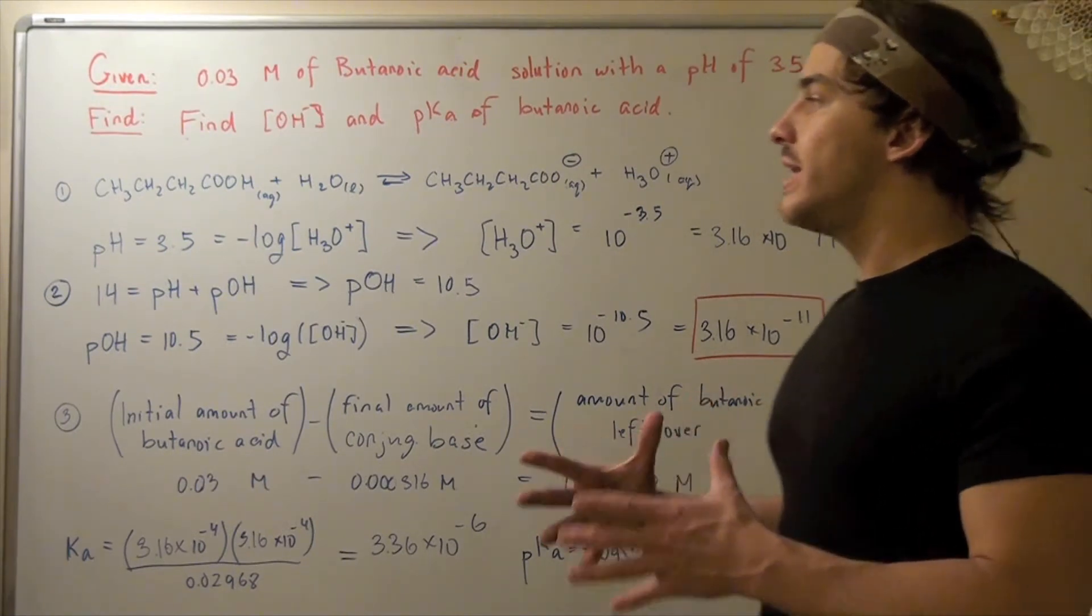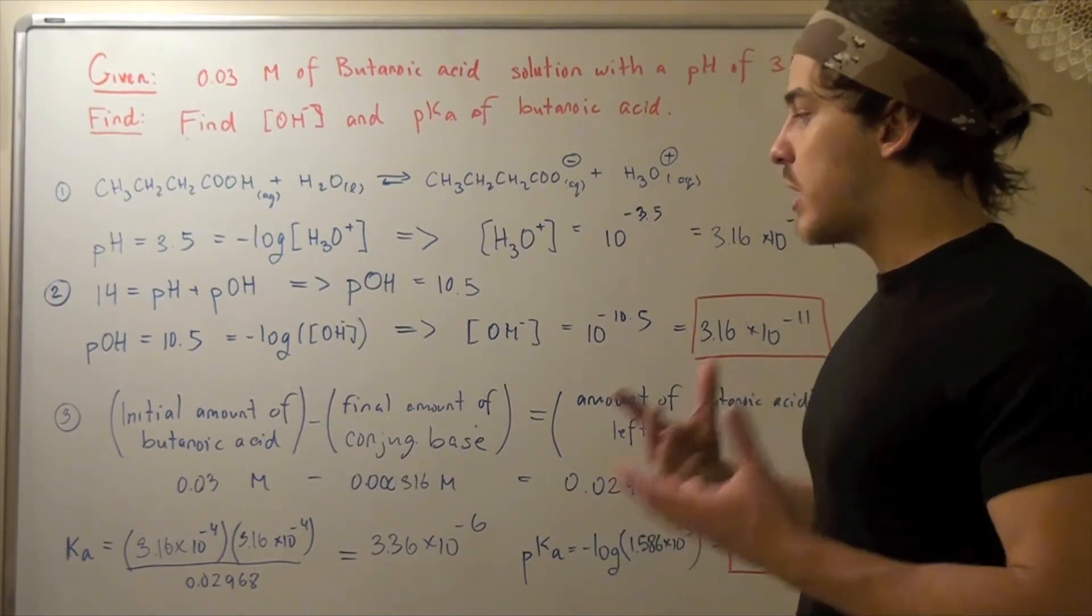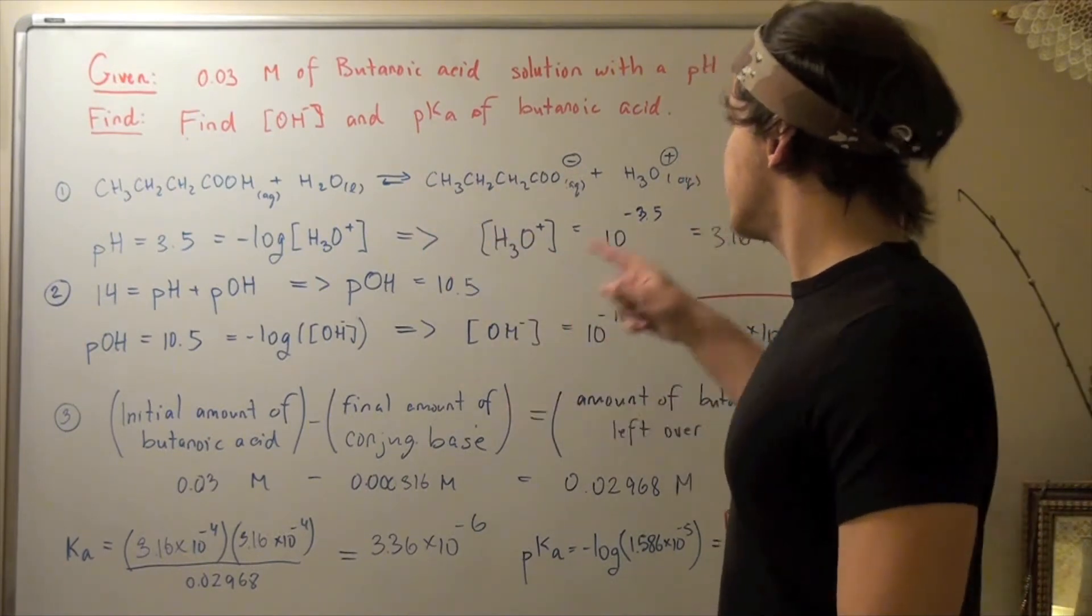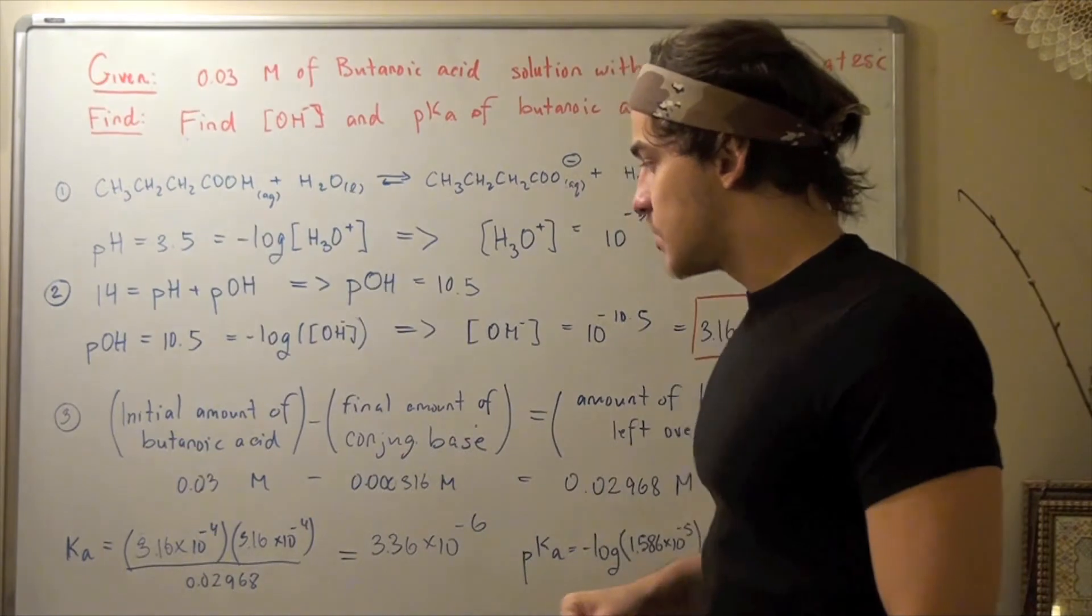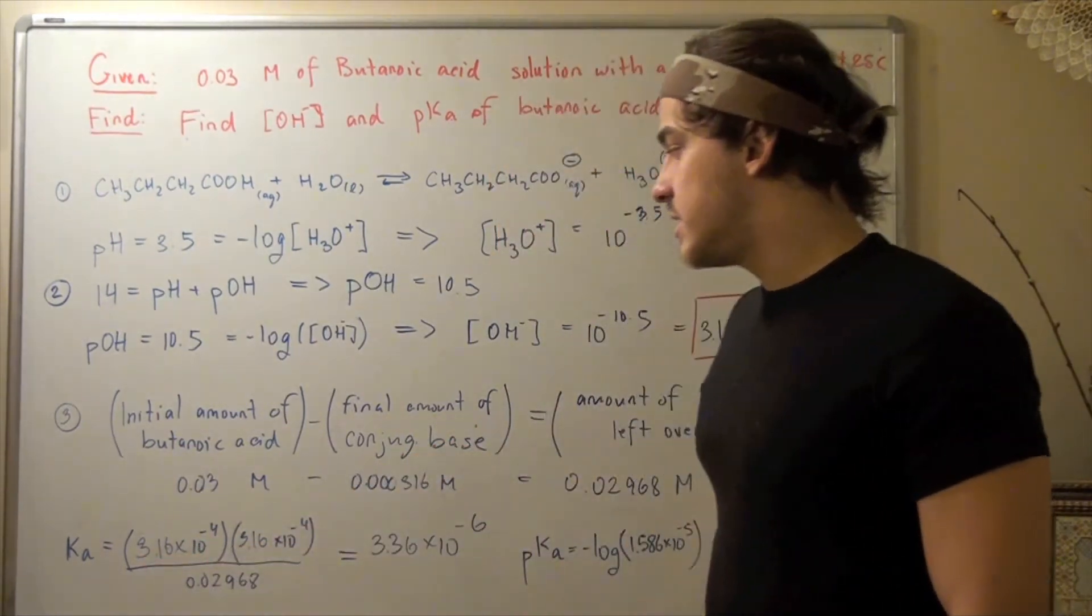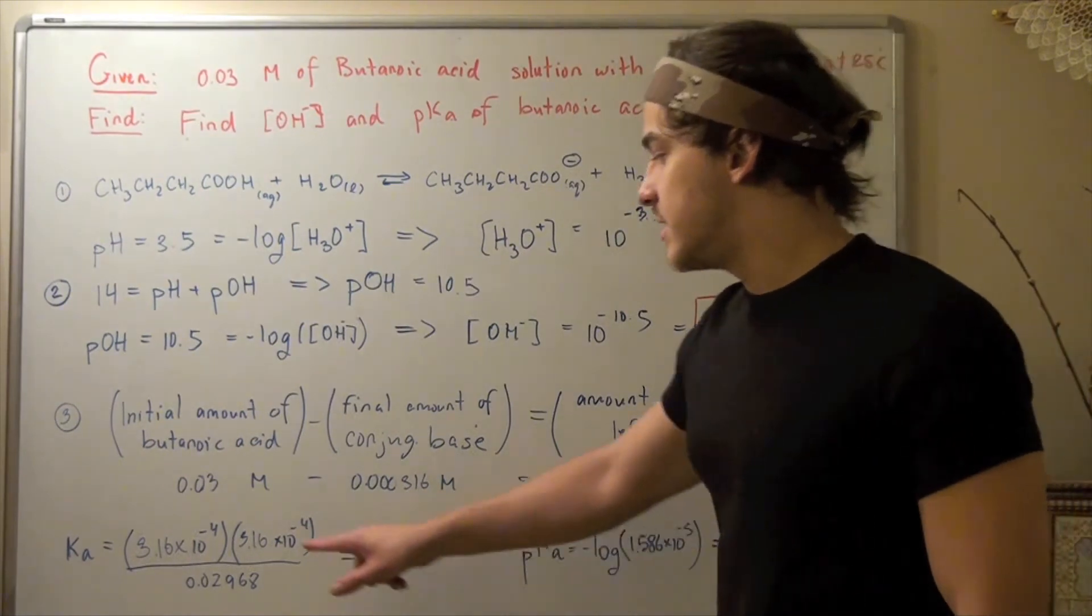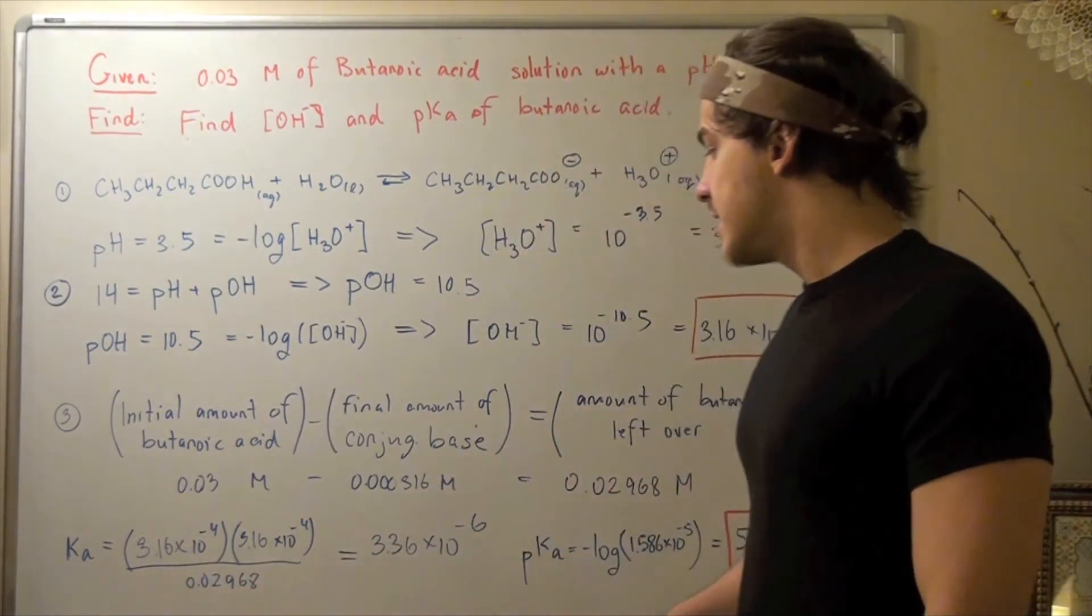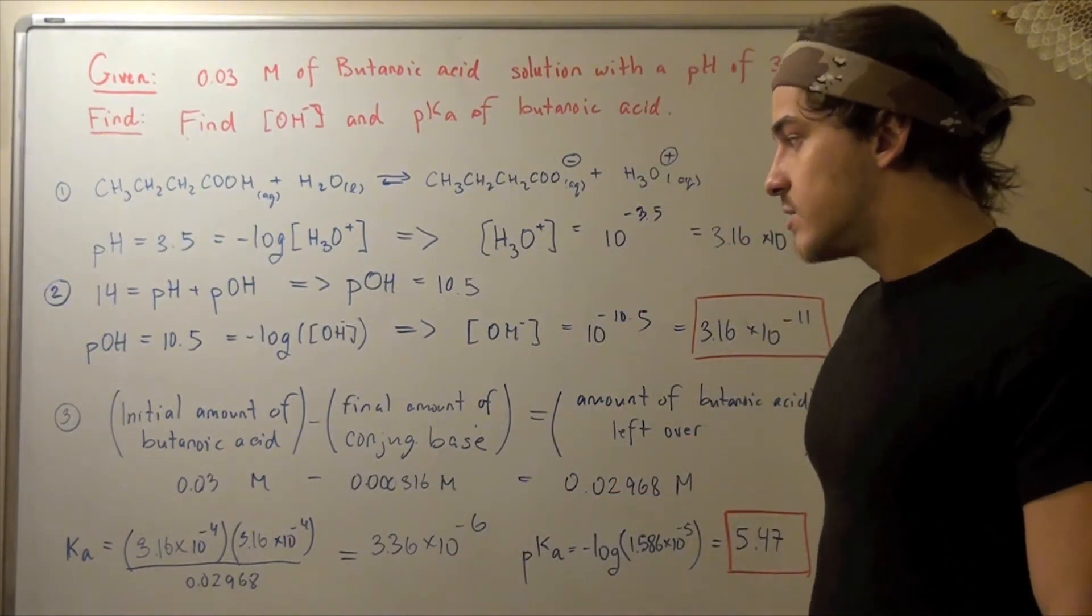So now I have all my equilibrium concentrations. I simply write my equilibrium expression. Ka equals the concentration of conjugate base times the concentration of hydronium divided by the concentration of acid. So 3.16 times 10 to negative 4 times 3.16 times 10 to negative 4 divided by 0.02968 gives me 3.36 times 10 to negative 6. That's our Ka.